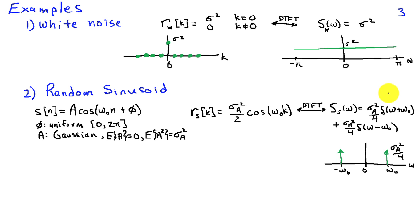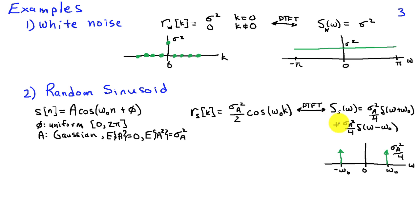At the other extreme, all power can be concentrated at a single frequency. Define a random signal s of n as a cosine of omega naught n plus phi, where phi is uniform on zero to 2 pi and A is Gaussian with zero mean and variance sigma_a squared. The correlation sequence is sigma_a squared over 2 times cosine of omega naught k, and its DTFT yields a power spectrum with all energy concentrated at plus and minus omega naught, with impulse area sigma_a squared over 4.